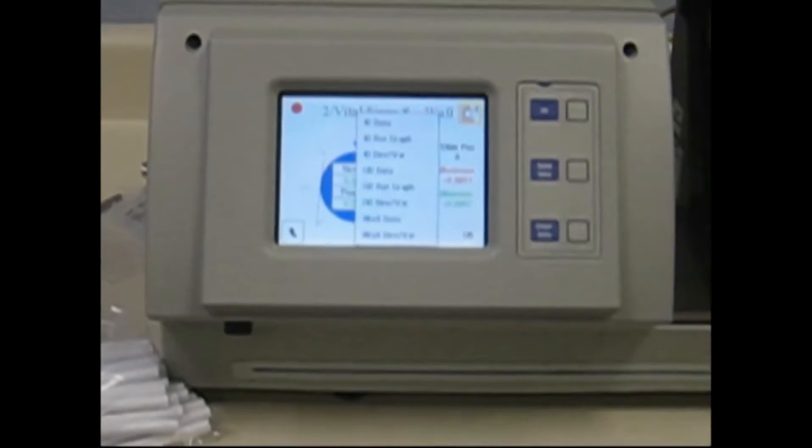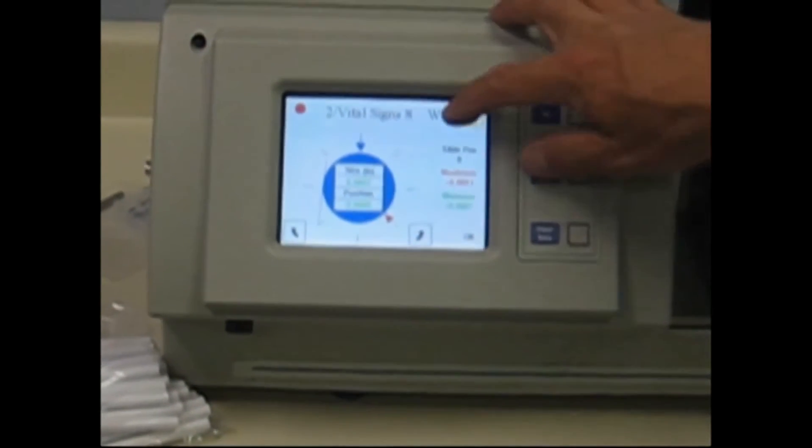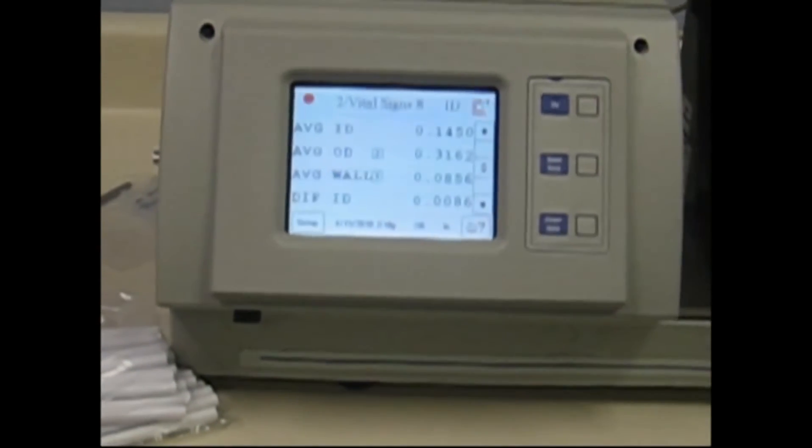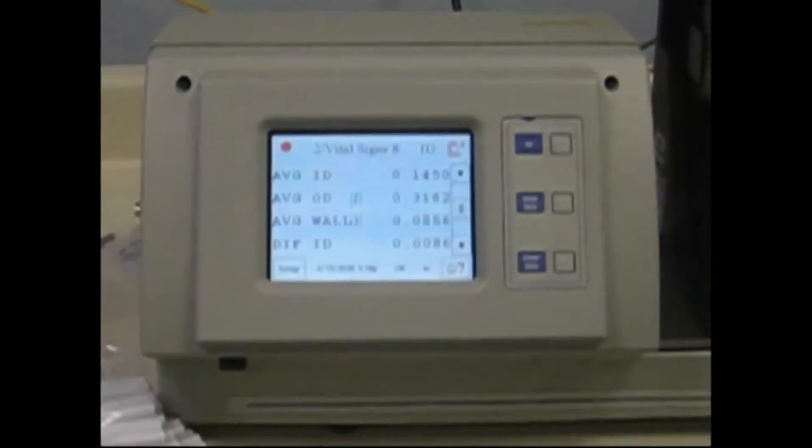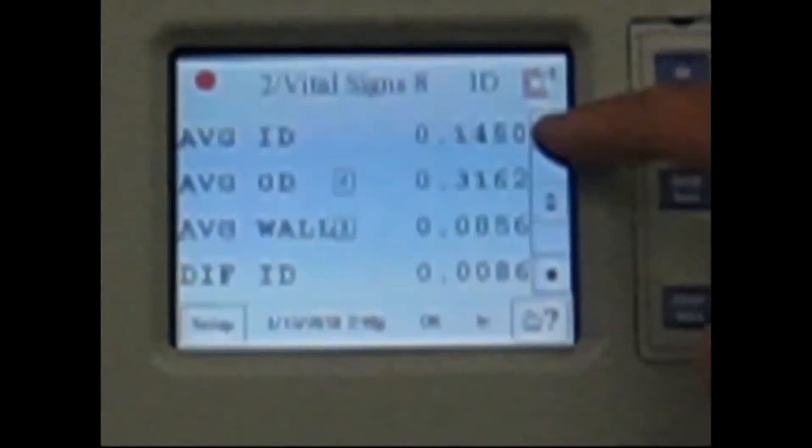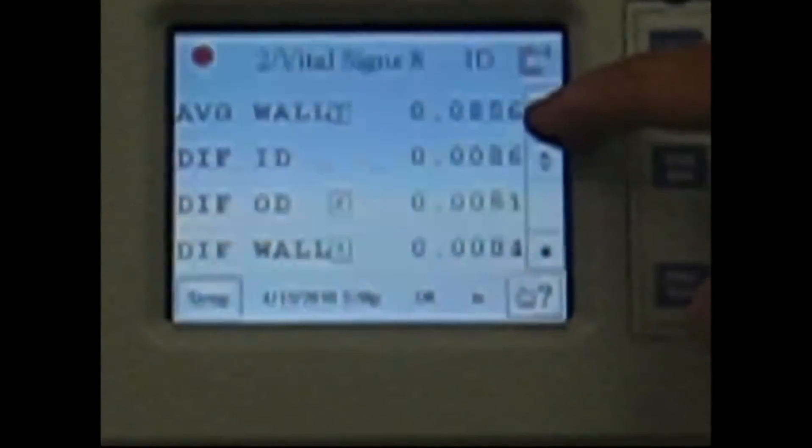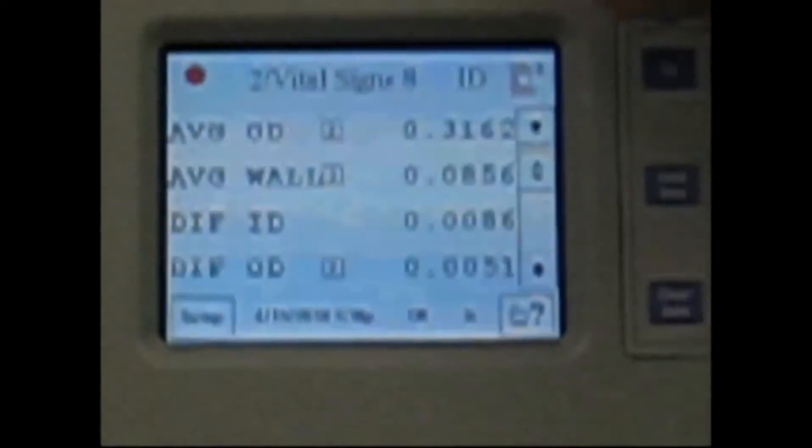You can use this tab here to go and interrogate all of the data. You can go and look at the ID data, and the ID page actually will show all the averages here: average ID, OD, wall, etc. And you can scroll through those settings to look at the max, min, and difference.